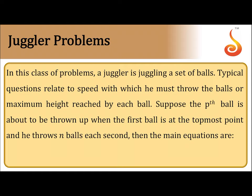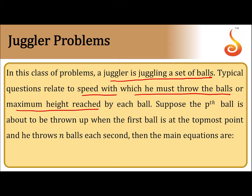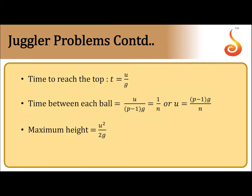In juggler problems, a person is juggling a set of balls. Typical questions relate to finding the speed at which he must throw the balls, the maximum height, or the time interval. The key scenario is: the p-th ball is about to be thrown up when the first ball is at the highest position, and he throws n balls per second. The time to reach the topmost position, the time interval between each ball, and the maximum height are all important.